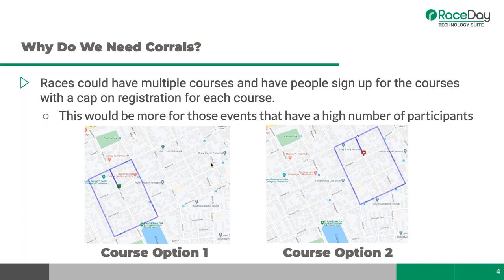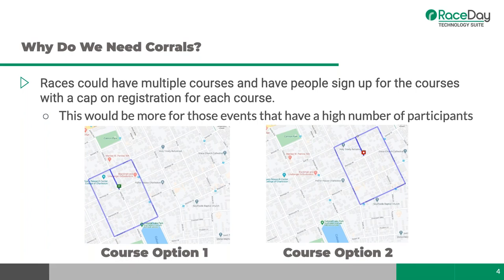Another way of managing this is to have multiple courses and have people sign up for each course with a cap on registration. This example shows the same area with one block removed — essentially the same course. It's completely feasible to set up an east course race and a west course race on RunSignup.